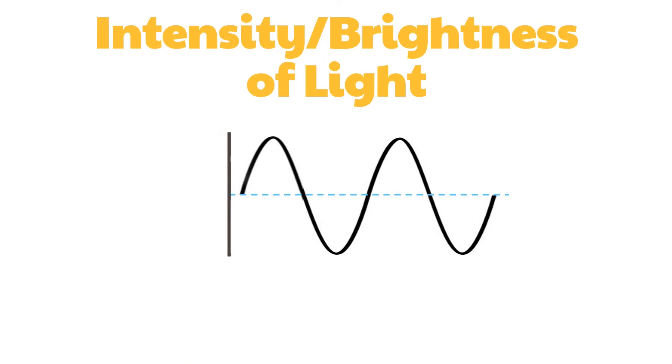Intensity or brightness is related to the wave's amplitude. The height of the amplitude tells the brightness of light. Thus, the higher amplitude corresponds to a brighter light, while lower amplitude corresponds to a dull light.